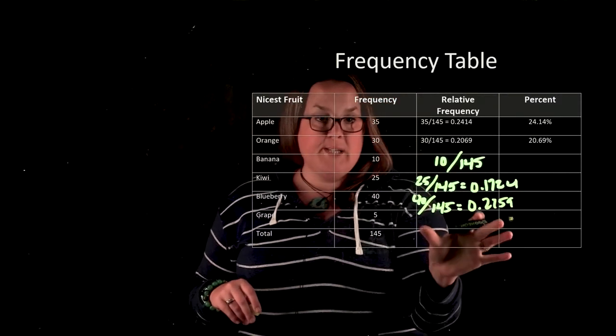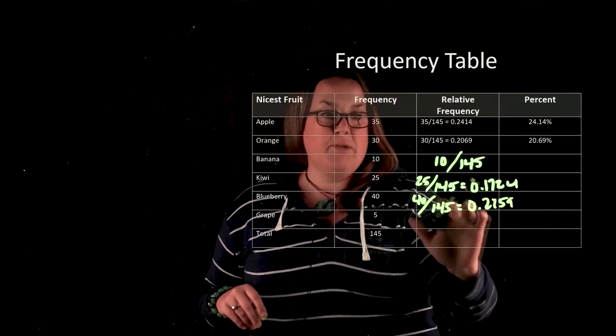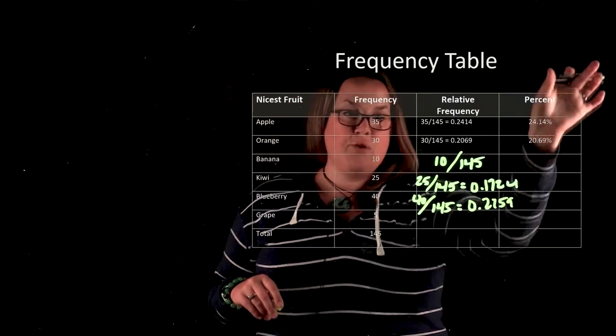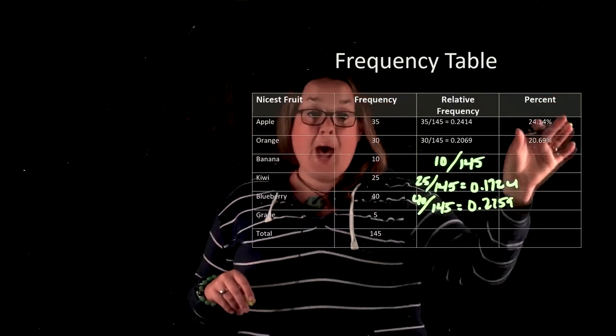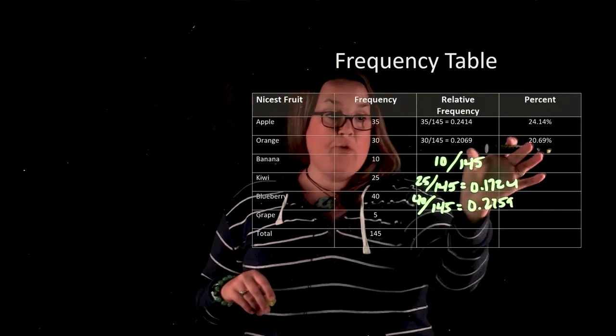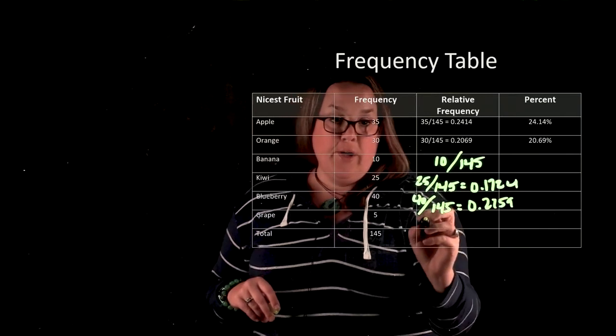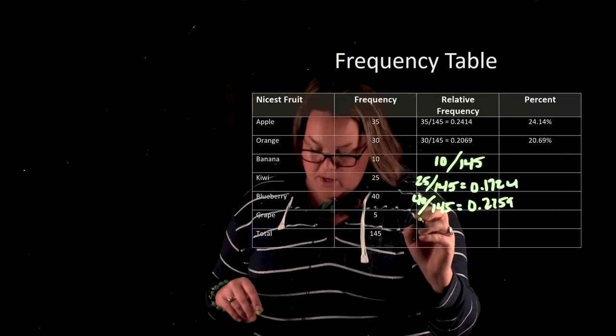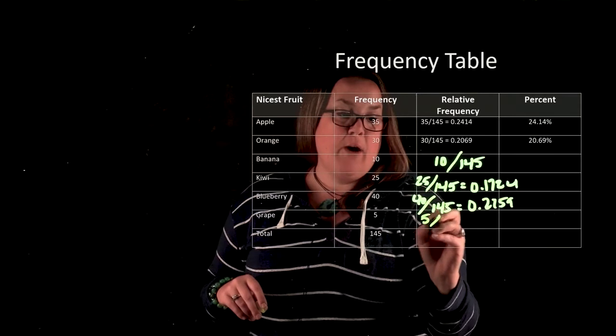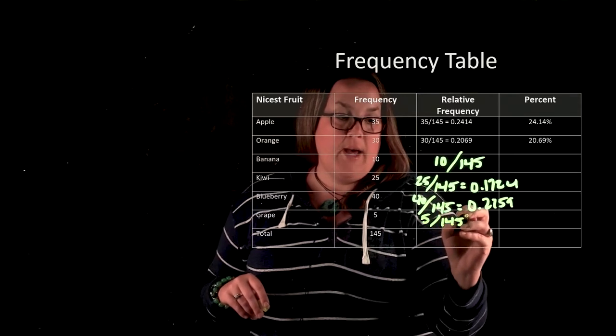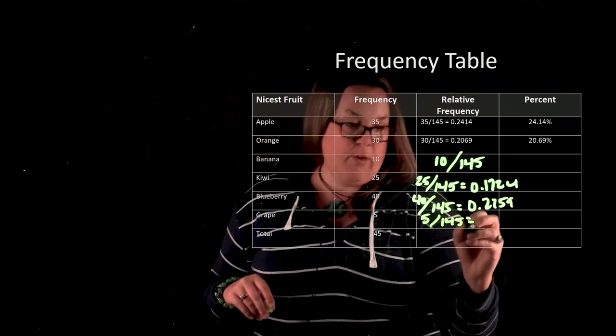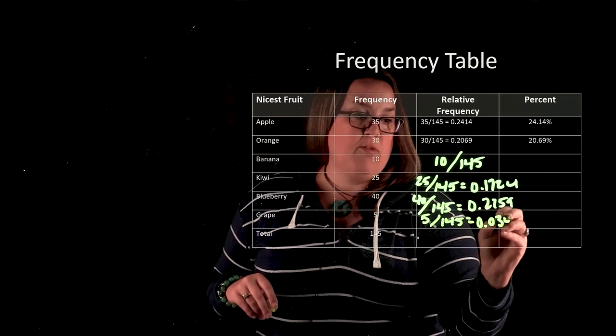Now the reason that I'm doing this and carrying it out to the decimal value is because when I transition into the next numeric summary, percent, I'm just going to multiply that decimal value by 100. So for the very last one we have grape, which is 5 out of the 145, and if I carried that out to the decimal value I would have 0.0345.